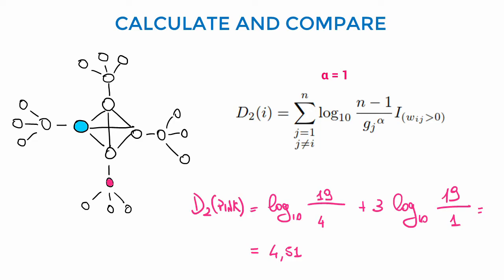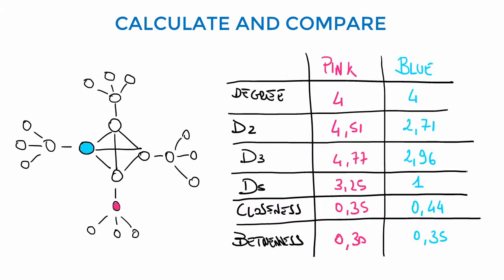In addition, every peripheral node is adding the logarithm of 19 over 1, as they only have a connection with the pink node. This leads to a score of 4.51 that is much higher than that of the blue node.